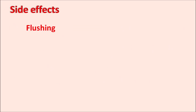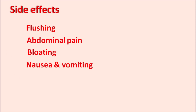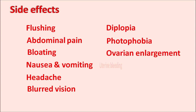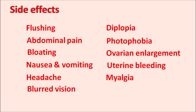The important side effects of clomiphene include flushing, abdominal pain, bloating, nausea, vomiting, headache, and visual disturbances such as blurred vision, diplopia (double vision), and photophobia. The drug can also produce ovarian enlargement, uterine bleeding, myalgias, and mastitis.